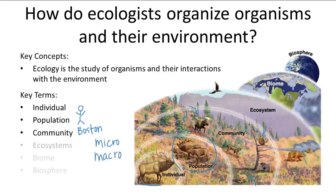Next you have an ecosystem, and this encompasses the community and the non-living environment, which is also known as the abiotic environment. So in the ecosystem you also have the water, the air, or the soil. These are all non-living things that are incorporated in the ecosystem.